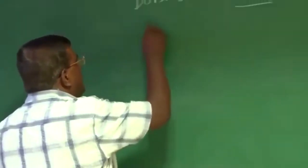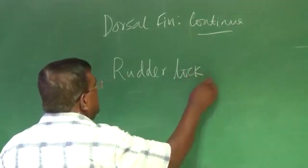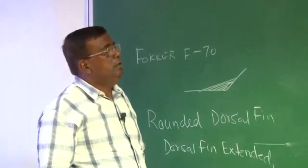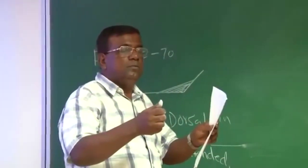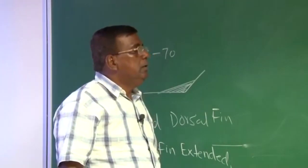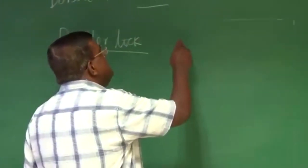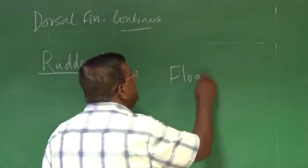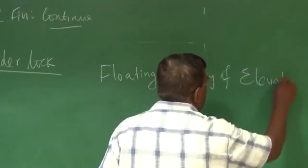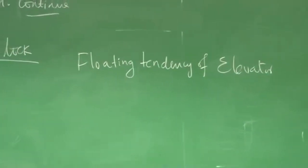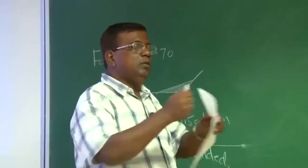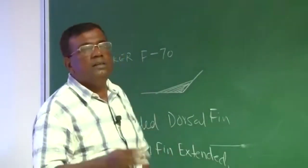You know something called the rudder lock phenomenon. At some point in time, it was a really serious challenge when airplanes were to be flown with fewer actuators or other mechanisms. You have been exposed to the concept of floating tendency — the tendency of the elevator — for a conventional reversible airplane. I am talking mostly about reversible type airplanes: you pull the stick, elevator goes up or down; you put elevator up and down, stick will go forward or backward. Nowadays it is not reversible — there are actuators — but the fundamental issue must be understood.